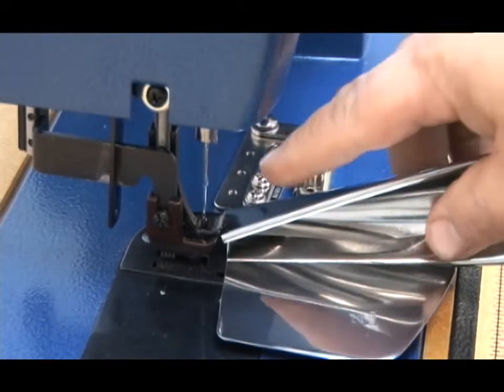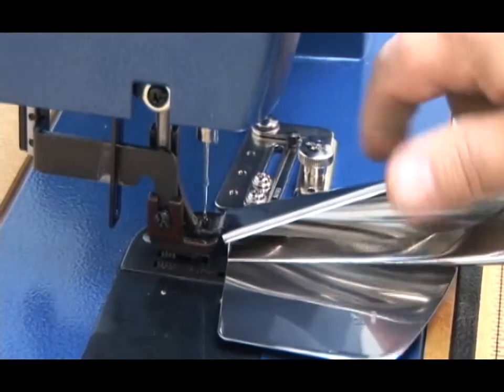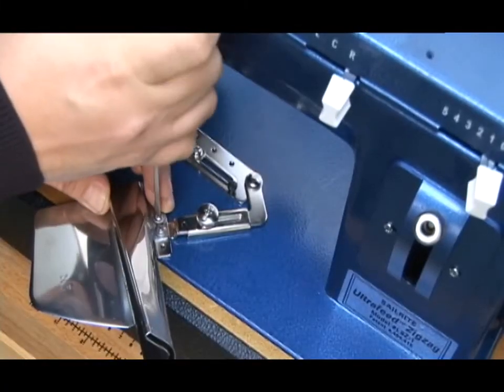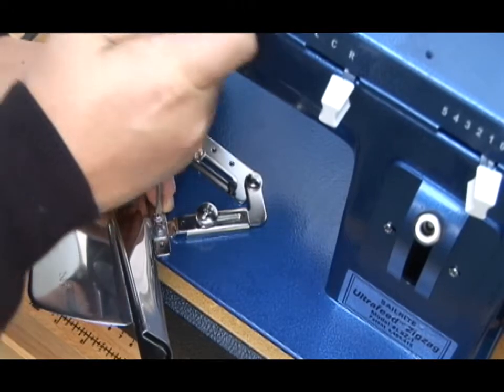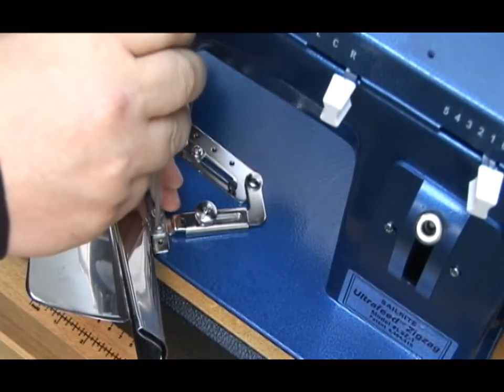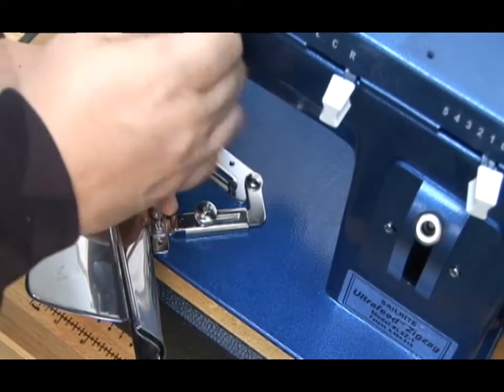Now swing the binder into place. You can see here that it is actually hitting the feet. You'll need to move the binder back. So release these two screws and then simply slide the binder back or forward depending again on the sewing machine you are using.